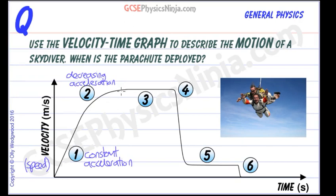Now the skydiver hasn't stopped — the skydiver is still falling but at a constant speed at this point. The speed, or velocity, is not changing. So at three we've got a constant speed, constant velocity.